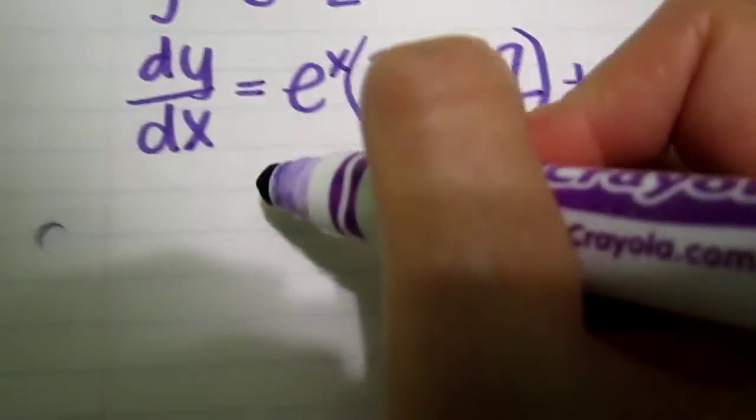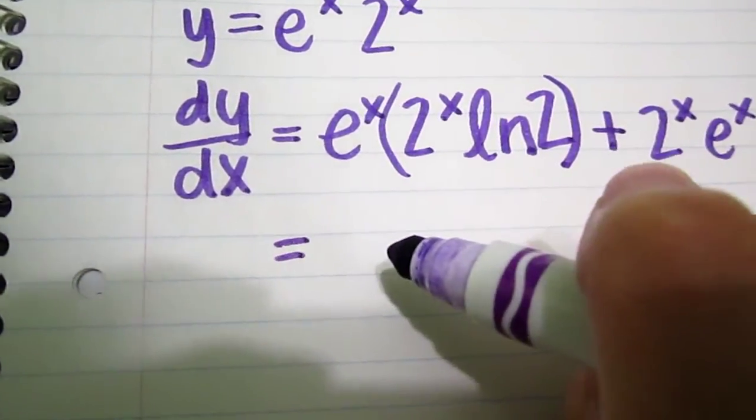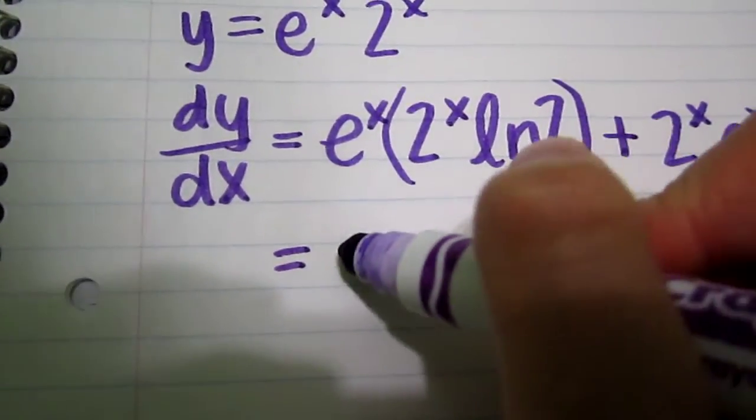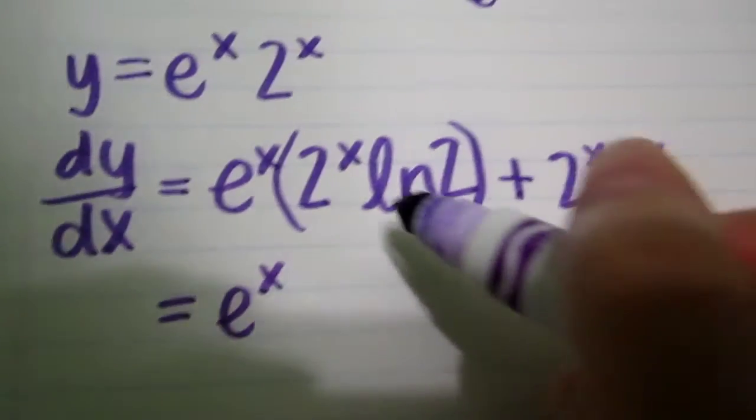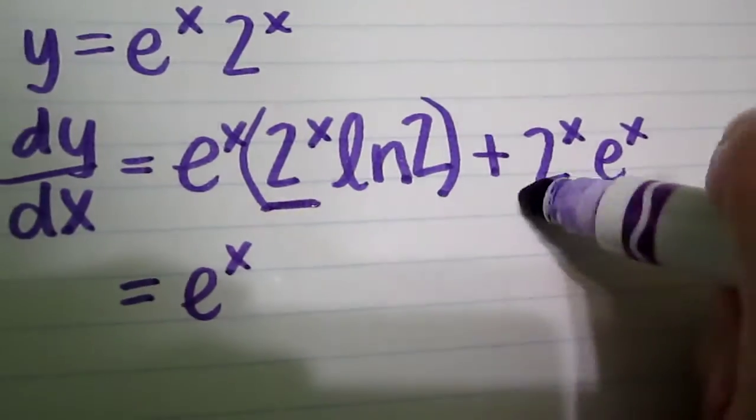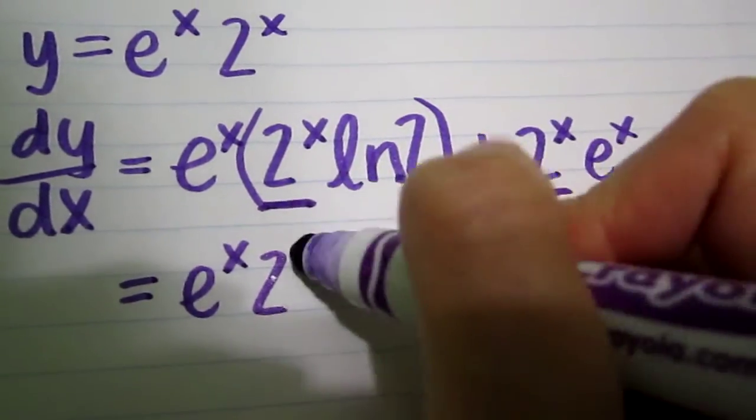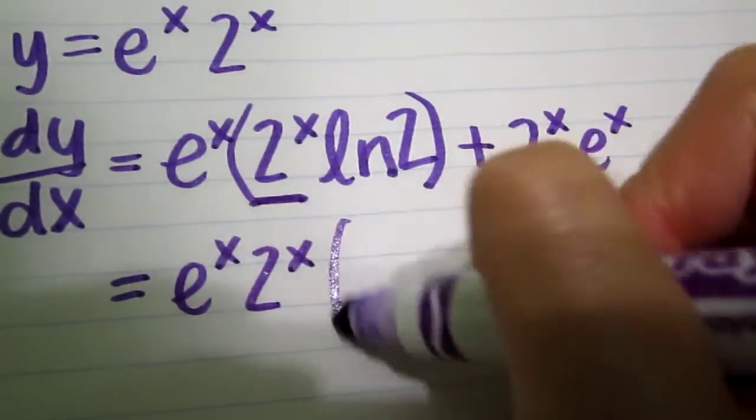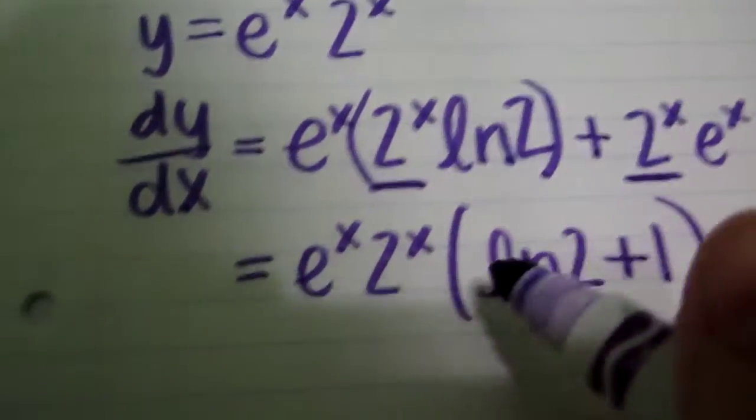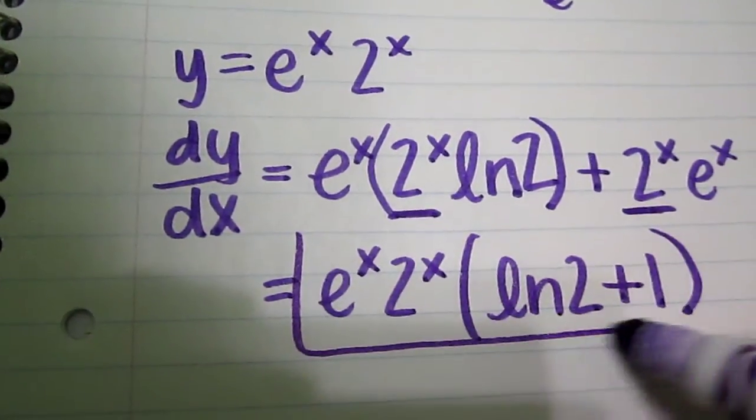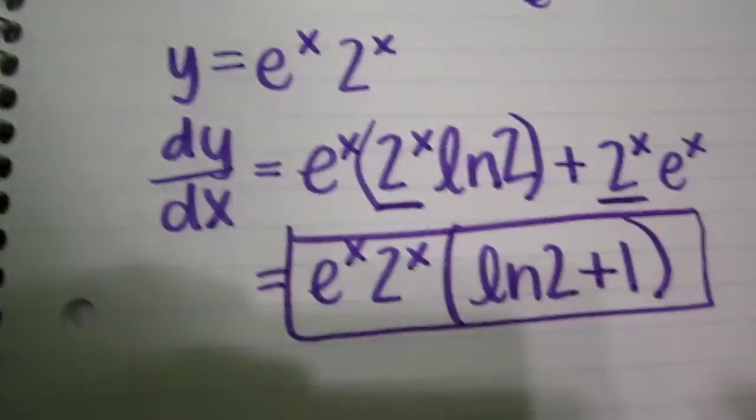But we can simplify this further by factoring out things in common, which is e to the x and 2 to the x because you can see right here. And that leaves you with natural log 2 plus 1. And this is your answer.